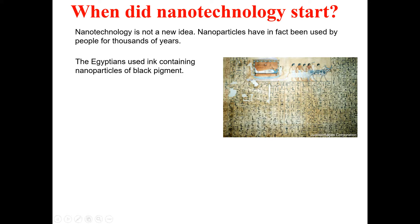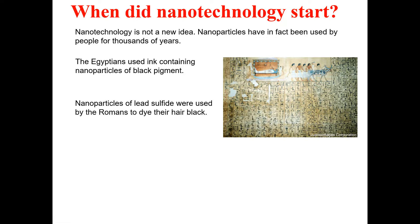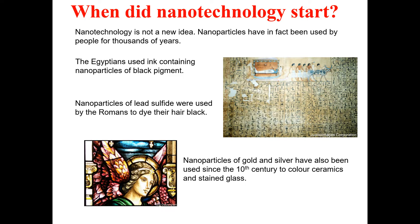Some historical evidence: the Egyptians used ink containing nanoparticles as a black pigment. Similarly, nanoparticles of lead sulfide were used by the Romans to dye their hair black. These are examples from history showing that nanotechnology-related materials were being utilized long before the term was coined.